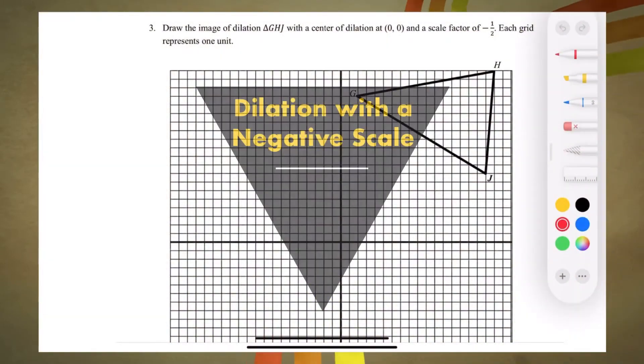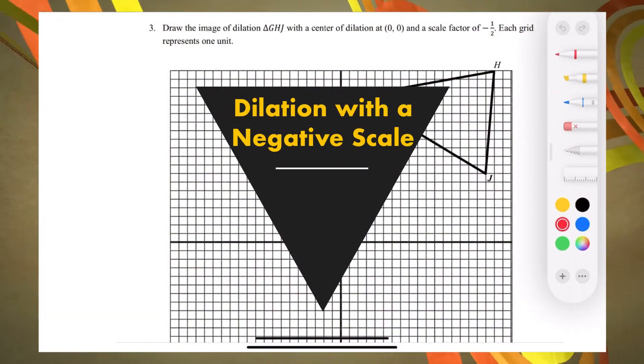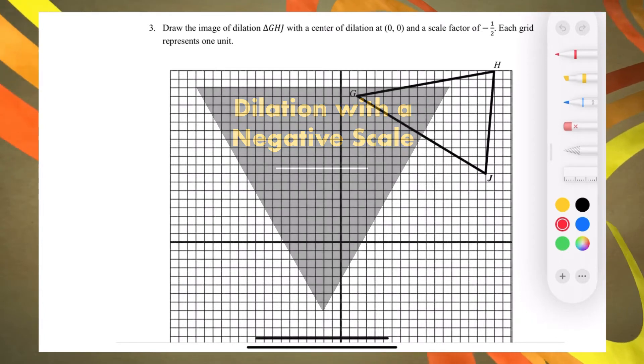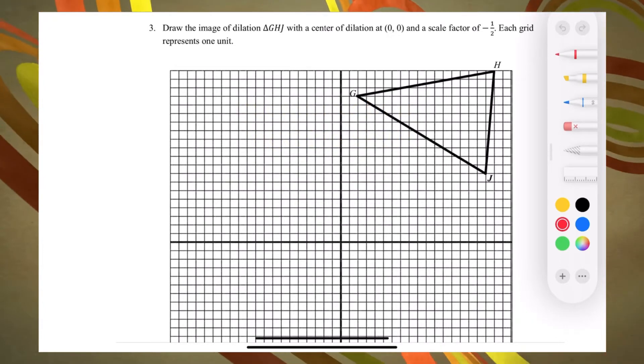In this video, let's talk about the dilation of an image on the coordinate plane with a negative scale factor. Consider triangle GHJ. Let's draw the image of its dilation with a center of dilation at 0,0 and a scale factor of negative one-half.